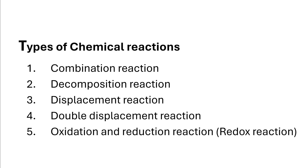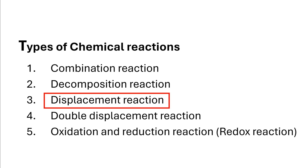There are many different forms of chemical reactions that take place in nature. These can be categorized into five major types: combination reaction, decomposition reaction, displacement reaction, double displacement reaction, and oxidation and reduction reaction, or simply redox reaction. In this video we'll be demonstrating a few laboratory examples of the third type, which is displacement reaction.